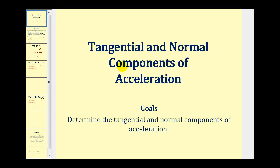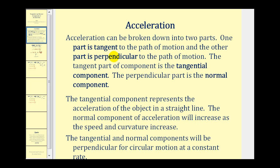Welcome to a lesson on the tangential and normal components of acceleration. Acceleration can be broken down into two parts: one part is tangent to the path of motion, and the other is perpendicular to the path of motion. The tangent part is called the tangential component, and the perpendicular part is the normal component.